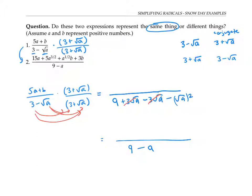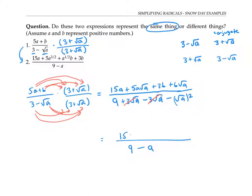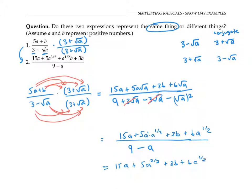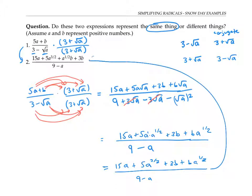Now let's look at the numerator. We're going to have four terms: b times three gives us 15a... wait, let me work through this. That gives us 15a plus five a times the square root of a, plus three b, plus b times the square root of a. Now, five a times the square root of a is the same as five a times a to the one-half. Adding exponents, that's five a to the three-halves. So the numerator is five a to the three-halves plus three b plus b times a to the one-half, which is exactly what appears in the second expression, just in a slightly different order. So these really are the same — kind of weird.